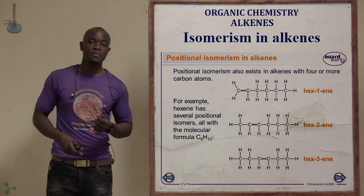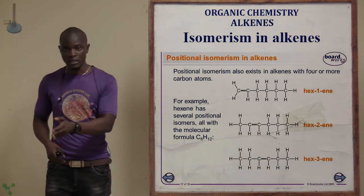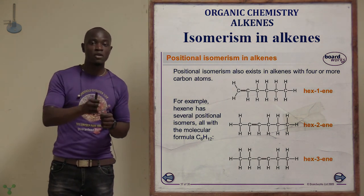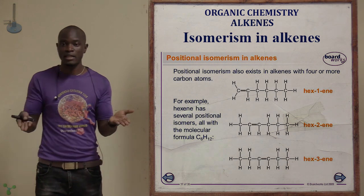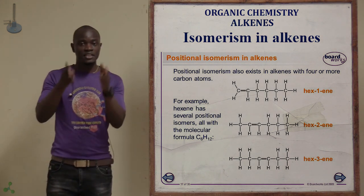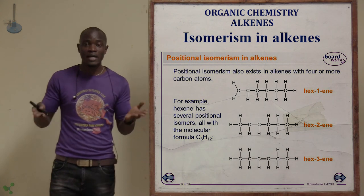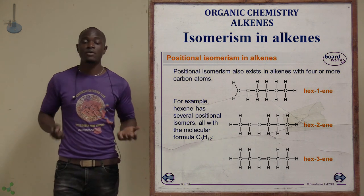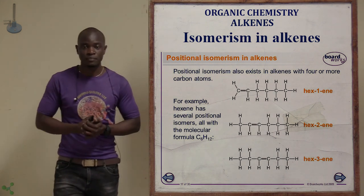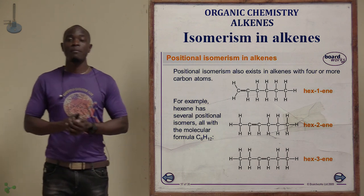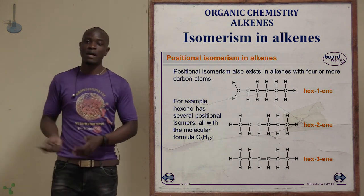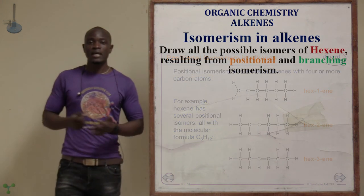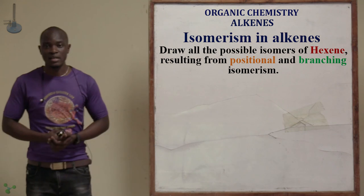For example, hex-1-ene, hex-2-ene, and hex-3-ene are all isomers of each other through positional isomerism. So we have two different types of isomerism: branching isomerism and positional isomerism.